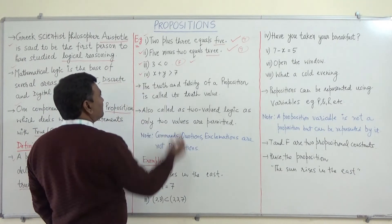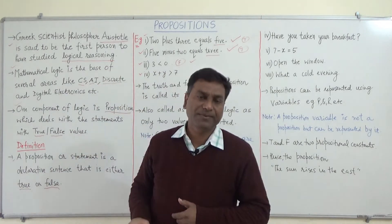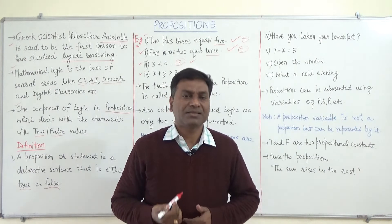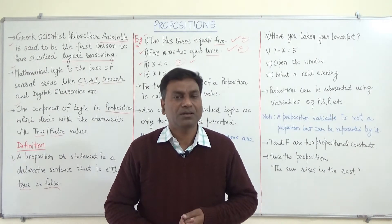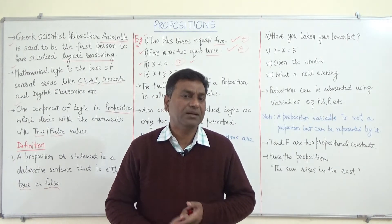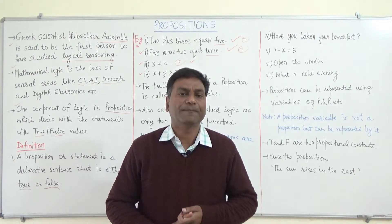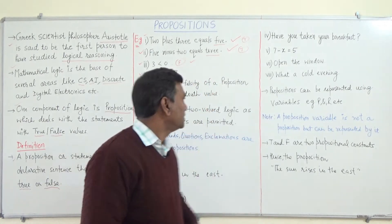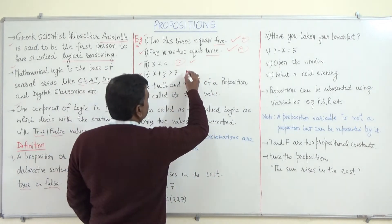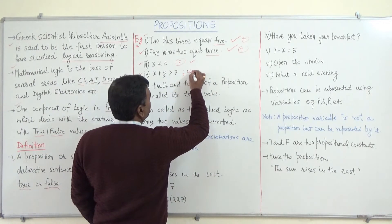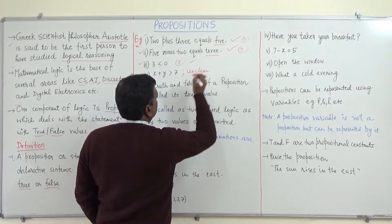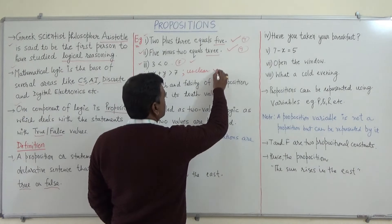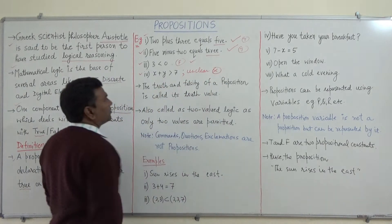In the fifth example, x plus y is greater than 7. It is unclear whether this is true or false because it depends on the values of x and y, which are variables and unknown. Since we cannot assign a definite truth value, this is not a proposition.